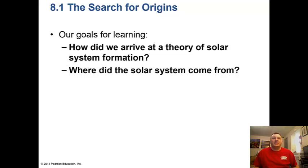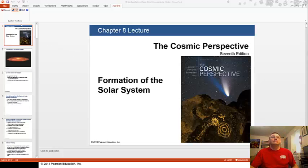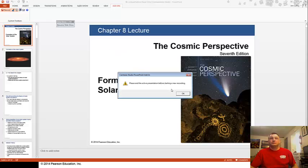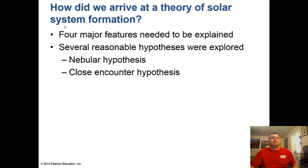Our goals for learning are: how did we arrive at the theory of solar system formation and where did the solar system come from? There are four major features that need to be explained, and several reasonable hypotheses were explored: the nebula hypothesis and the close encounter hypothesis.